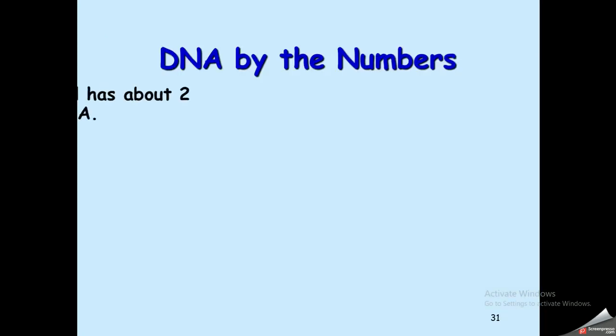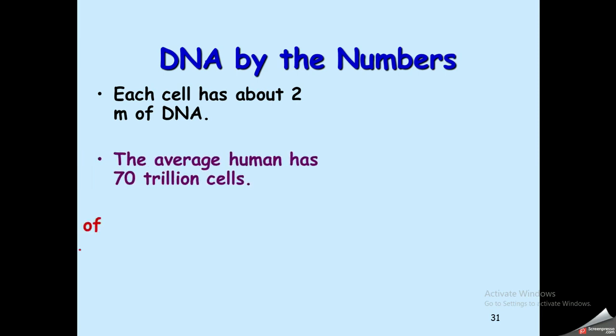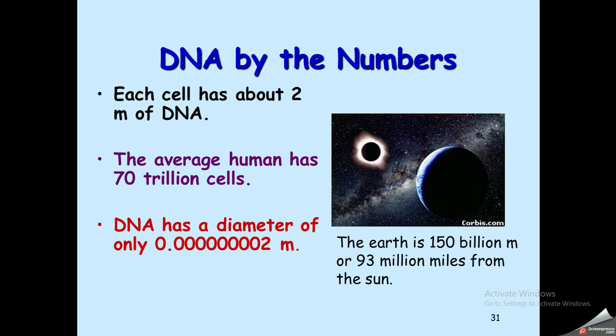The DNA available in every cell is very compact. If we were to extract and stretch all the DNA from a single cell, its length would be about two meters, even though the diameter of DNA is only about 0.0000002 meters — extremely thin. If we stretched the DNA from every cell in the human body, the total distance would exceed the distance between the Earth and the Sun.